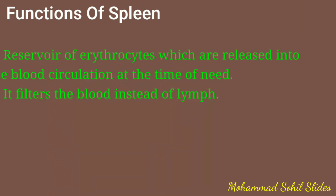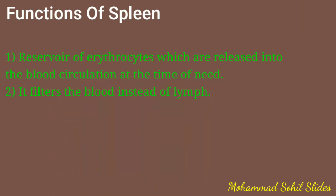The functions of the spleen include: acting as a reservoir of erythrocytes released into blood circulation when needed, filtering the blood instead of lymph, responding to foreign particles and destroying them, and removing worn-out red blood cells. The lymphocytes in the white pulp stimulate immune responses, while macrophages in the red pulp remove foreign substances and worn-out RBCs.